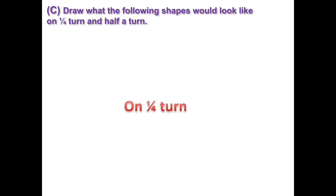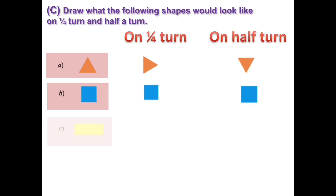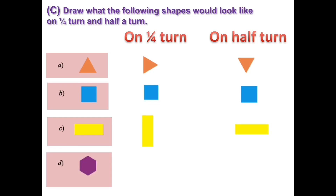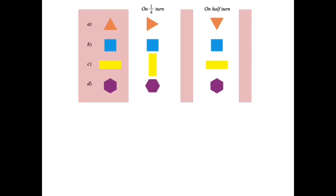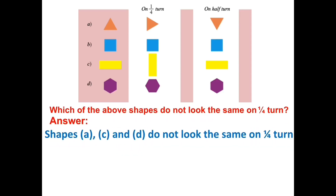Draw what the following shapes would look like on a one-fourth turn and a half turn. Shapes A, C, and D do not look the same on a one-fourth turn.